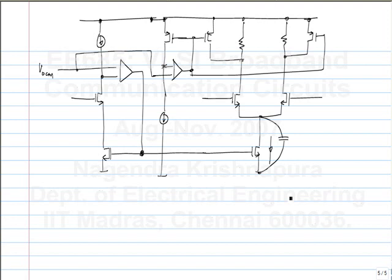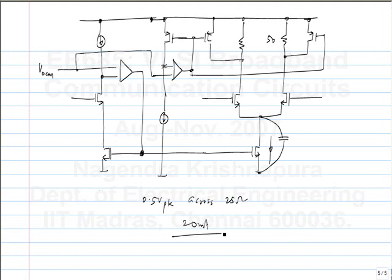For the third assignment you are supposed to design a transmitter like this. If you want to drive half a volt and each termination is 50 ohms, the current you need: to have 0.5V peak across 25 ohms (50 and 50 in parallel) you will need 20 milliamps. So you will have a large current and consequently large devices.